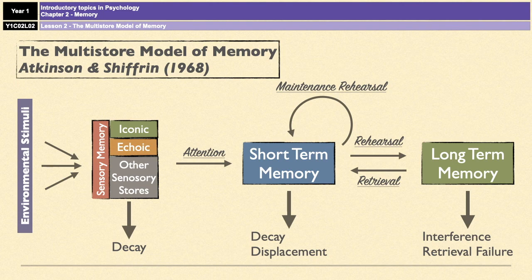That is your general multi-store model of memory. It's very simple — everything starts with an environmental stimulus, then goes to sensory memory, then short-term memory, then long-term memory. There is only one short-term memory store and only one long-term memory store, which is important to bear in mind, particularly when we get to the evaluation points.